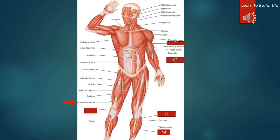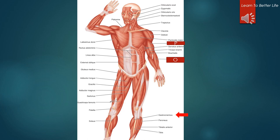K is the quadriceps femoris. L is the patella. M is the tibia. N is the gastrocnemius. O is the brachioradialis.